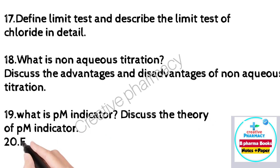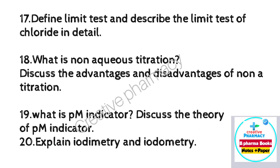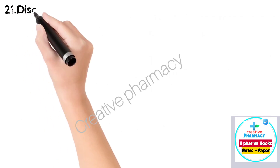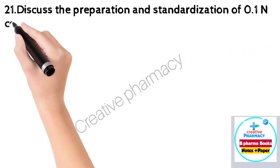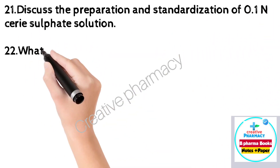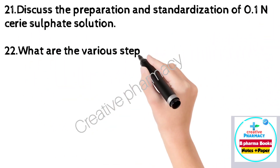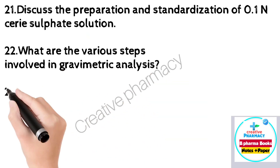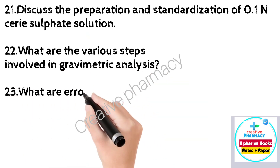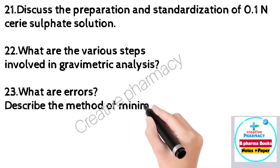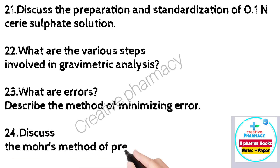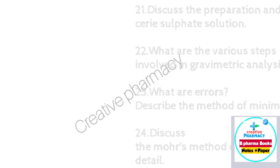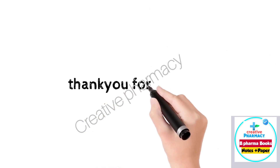Question 18: Explain iodimetry and iodometry. Question 19: Discuss the preparation and standardization of 0.1 N ceric sulfate solution. Question 19: What are the various steps involved in gravimetric analysis? Question 20: What are errors? Describe the method of minimizing error. Question 20: Discuss the Mohr's method of precipitation titration in detail.